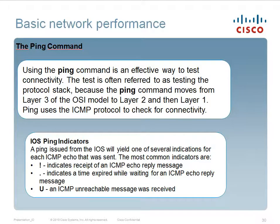Basic network performance — the ping command: using the ping command is an effective way to test connectivity. The test covers the full protocol stack, as the ping command moves from layer 3 to layer 2 and then layer 1 of the OSI model. Ping uses the ICMP protocol to check for connectivity. IOS ping indicators: a ping issued from IOS will yield one of several indications for each ICMP echo sent. The most common are: '!' indicates the recipient received an ICMP echo reply; '.' indicates a timeout while waiting for an ICMP echo reply; and 'U' indicates an ICMP unreachable message was received.